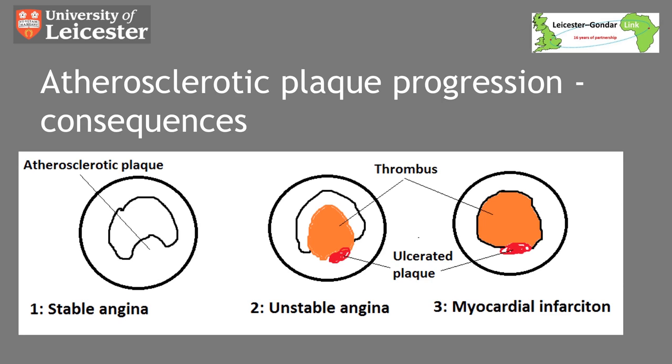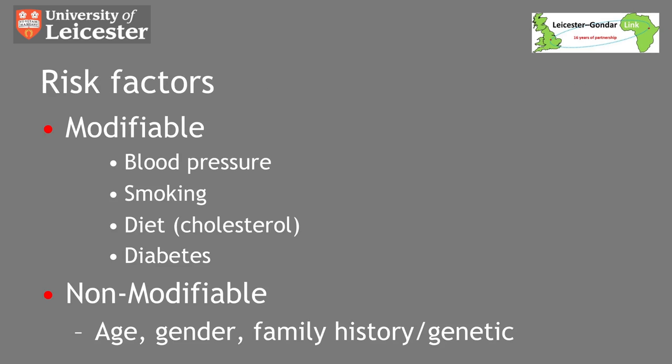When the diameter of the lumen is halved, haemodynamically significant stenosis occurs, which causes ischemia with increased oxygen demand. Total occlusion results in infarction distally. Unstable plaques can also rupture and form emboli at distant sites.